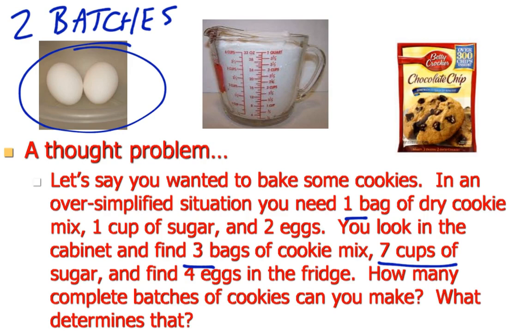However, because we need two eggs for every one batch, and because we only have four eggs, we're only going to be able to make two batches of cookies. This is an oversimplified everyday use of a limiting reactant type problem.